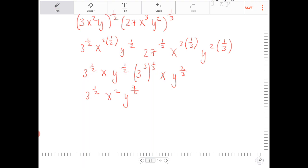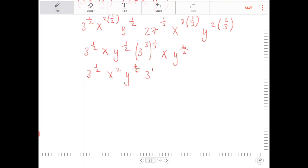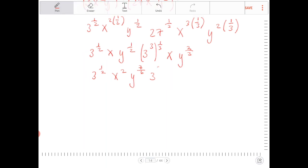And then I have the 3 to the third to the one third. That's just 3 to the first then. And then the last thing I'm going to do is I'm going to combine the 3 to the first and the 3 to the one half. And what I'll get there is, well, 1 is the same thing as 2 over 2, right? So when I combine 3 to the one half and 3 to the 2 over 2 together, I'm going to end up with 3 to the three halves.